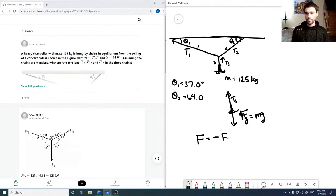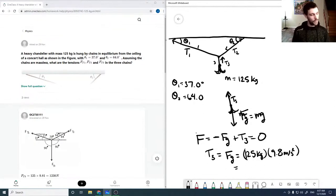And so, we can say that our force equation here is, I'll use up as positive. So minus our gravitational force plus T3 is equal to 0. So then that means that T3 is equal to our gravitational force, which is 125 kilograms times 9.8 meters per second squared, which comes out to be 1225 newtons. So there's our T3.